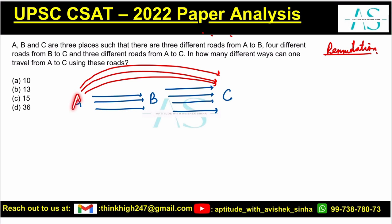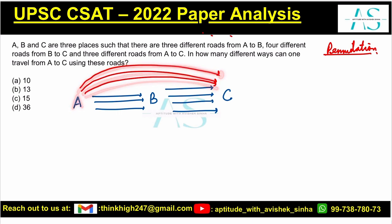A to C: we can go directly using one way, two way, and three way. So if I write A to C, I have three ways direct.